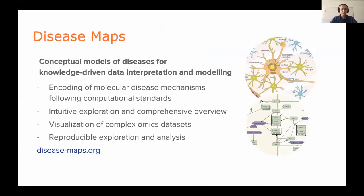Disease maps have a visual component and allow intuitive exploration of multiple mechanisms implicated in a given disease. They provide context, and on that context, visualization of complex omics datasets allows better interpretation. Because we have computational standards and extensive APIs, this is a basis for reproducible exploration and analysis, as queries can be formulated in a programmatic way. I invite you to check out more detail at diseasemaps.org.